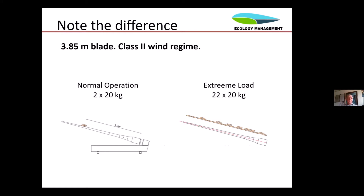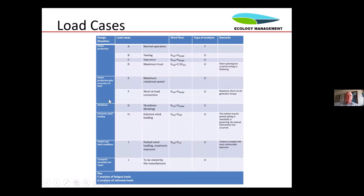For example, with a 10 kilowatt turbine with a 3.85 meter blade made of organic fibers, normal operation gives a load of 40 kilograms at 2.7 meters out. That's not much, but that's not how we design the blade. The blade has to be designed for the extreme load, which is actually 22,200 kilogram-force distributed over the blade. The extreme load is something you have to find, and the Dash 2 standard is very helpful on how to calculate it. All the load cases are given, and there are not that many to consider.